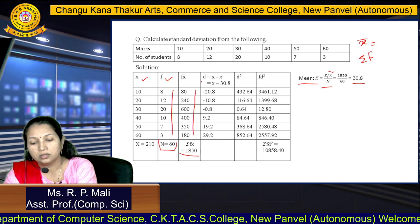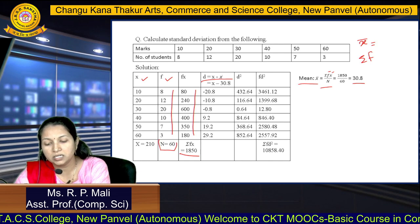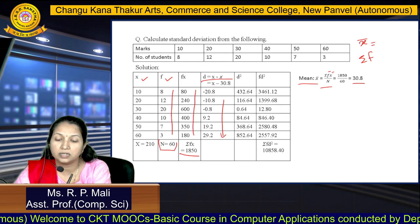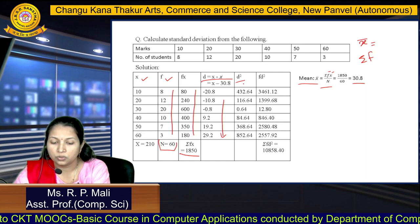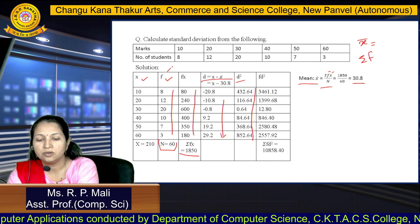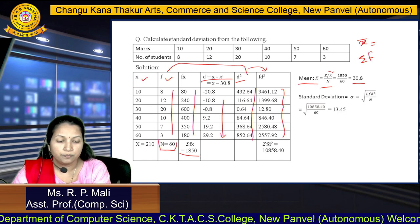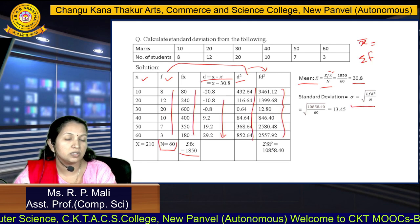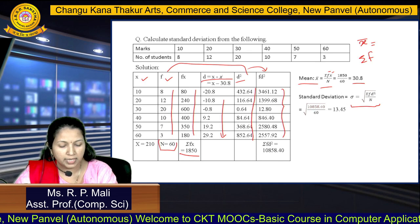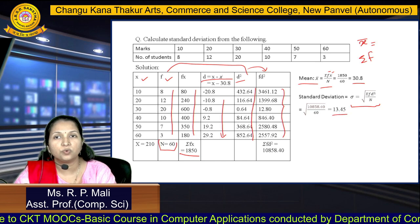After finding the mean, we find the deviation D = X − X̄. For the first value: 10 − 30.8 = −20.8; for the second: 20 − 30.8 = −10.8, and so on. We square each deviation to get D², then multiply by frequency to get fD². Applying the formula σ = √(ΣfD²/N) = √(10858.40/60) gives σ = 13.45.